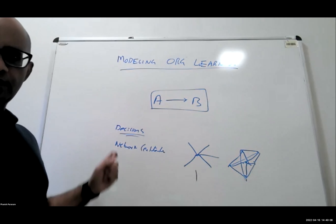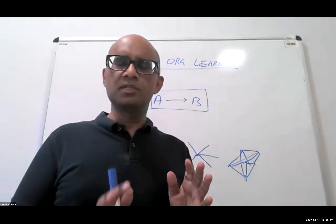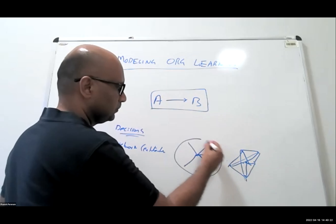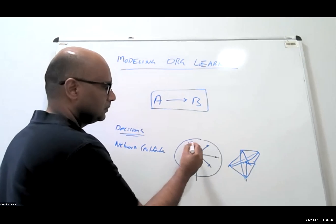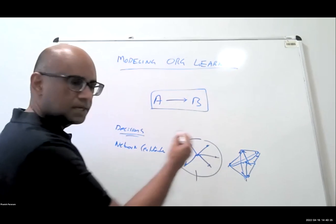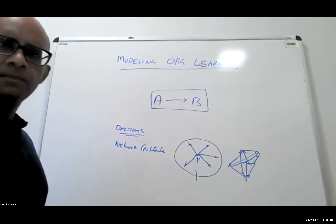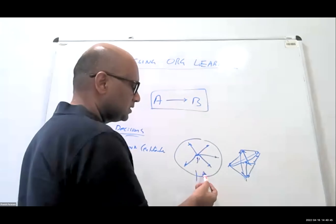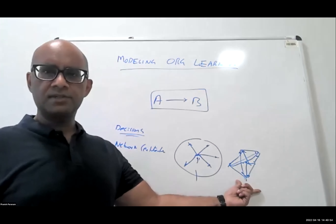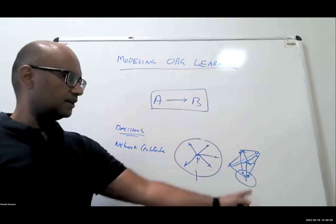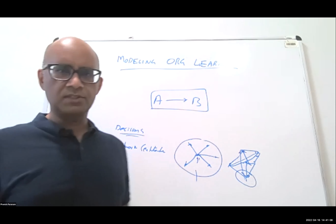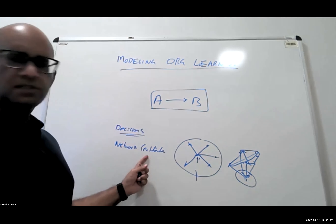Network centralization and decision centralization are often confused because people use the word centralization without specifying which they mean. You can have a highly centralized influence network where people still vote — making it a decentralized decision structure. Conversely, you can have a decentralized influence structure where one person makes the final call — a highly centralized decision structure. They are not identical, yet they are also not orthogonal.